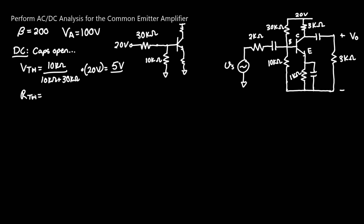For R_Thevenin, we take the 30 kΩ resistor in parallel with the 10 kΩ resistor. They are effectively in parallel because under DC conditions the voltage source is not varying and is considered ground, so both ends share the same potential. Taking 30 kΩ in parallel with 10 kΩ gives 7.5 kΩ.